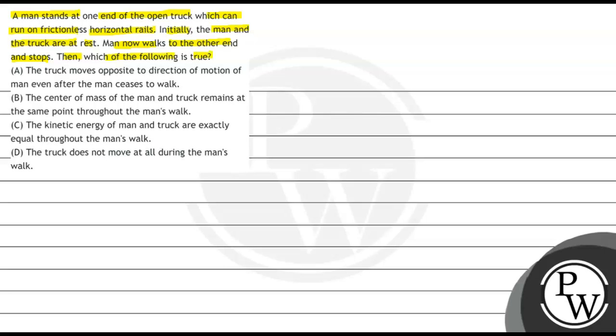So we have the four options given here. Option A says the truck moves opposite to the direction of motion of man even after the man ceases to walk. Option B says the center of mass of the man and the truck remains at the same point throughout the man's walk. Option C says the kinetic energy of man and the truck are exactly equal throughout the man's walk. And option D says the truck does not move at all during the man's walk.